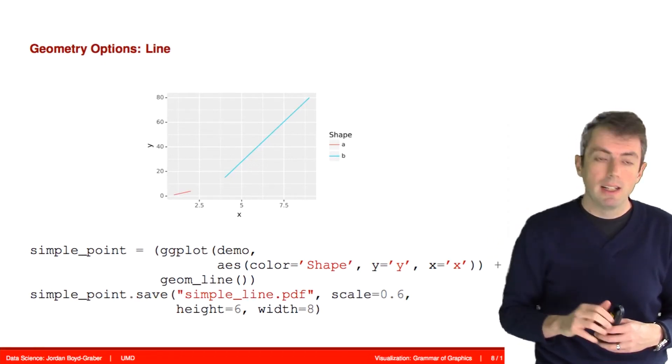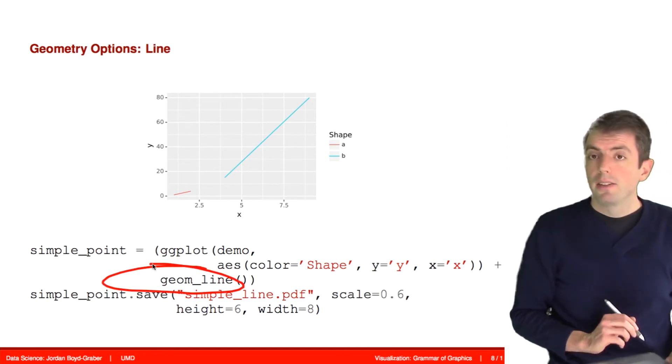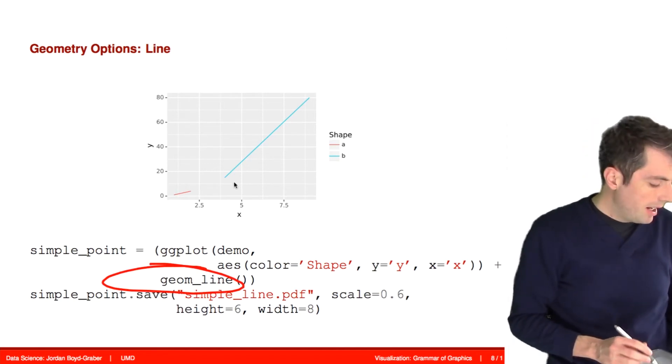Here we have swapped out geometry point, geom_point, for geom_line. This is the only thing that's changed here. And we have a very different graph as a result.